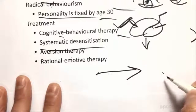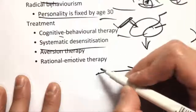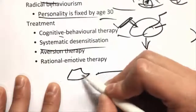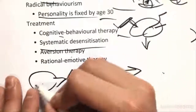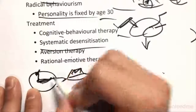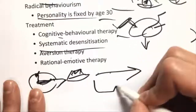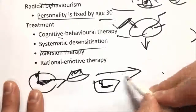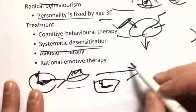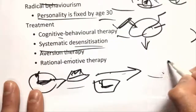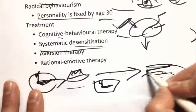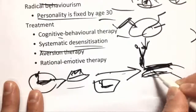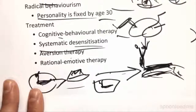For example, if someone is really scared of slugs, you start by just talking to them about slugs, then you show them a picture of a slug, and then slowly, slowly you increase exposure — you desensitize them systematically — until eventually they can actually hold one in their hand.